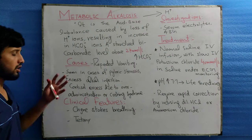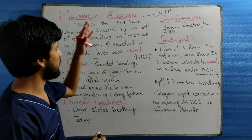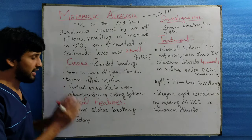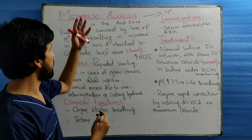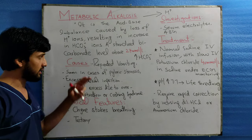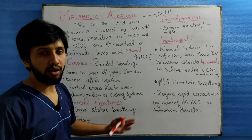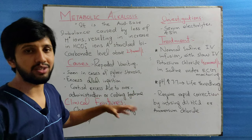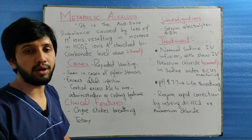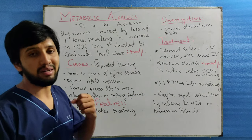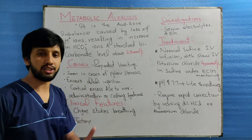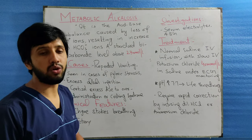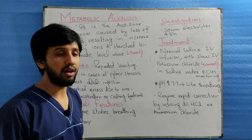Moving to the causes of metabolic alkalosis — what are the different causes which lead the body to this condition? Number one is repeated vomiting, which is usually seen in cases of pyloric stenosis. Excessive cortisol in the body, which may be due to its administration or due to Cushing syndrome. Cushing syndrome is the condition in which there is excess cortisol, which is a stress hormone, in the body.